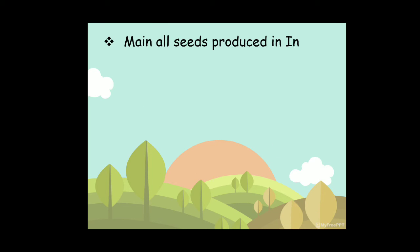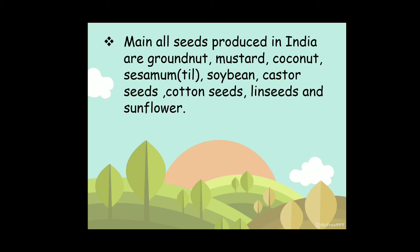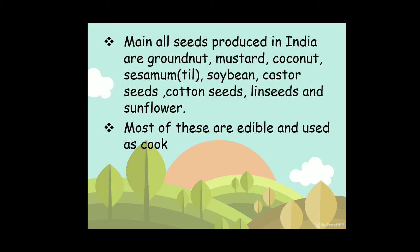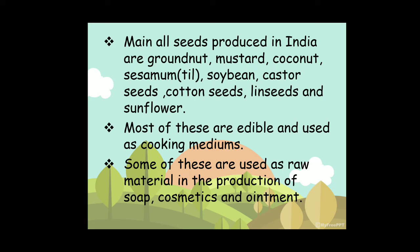Main oilseeds produced in India are groundnuts, mustard, coconut, sesame, till, soya bean, castor seeds, cotton seeds, linseed, and sunflower. Most of these are edible and used as cooking mediums. Some are used as raw material in the production of soap, cosmetics, and ointments.